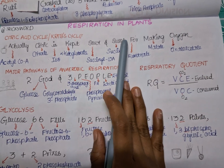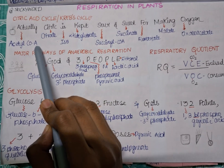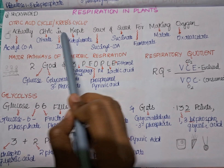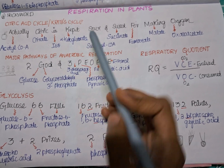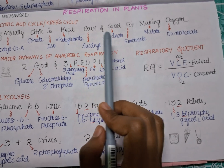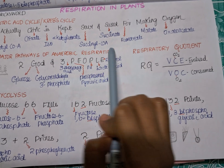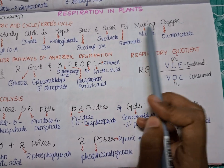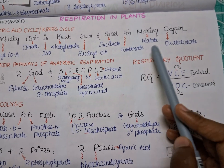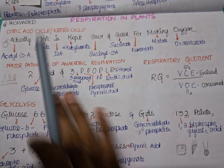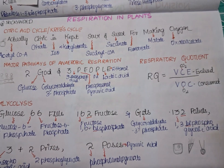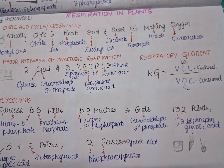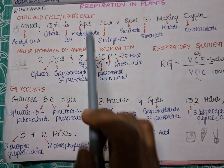This might not be literally true, but it's for your understanding. Here's what each word stands for: 'Citric' is for Acetyl-CoA. 'Citric' itself stands for Citrate. 'I' is for Isocitrate. 'Kept' is for Alpha-ketoglutarate. 'Sore' is for Succinyl-CoA. 'Sweet' is for Succinate. 'For' is for Fumarate. 'Making' is for Malate. 'Oxygen' is for Oxaloacetate. So the full trick is: Citric is kept sore and sweet for making oxygen.